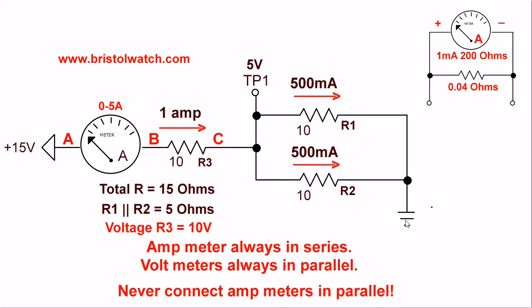Now if I take a voltmeter and measure from ground to test point 1, I will read 5 volts. If I take a voltmeter and read from B to C, I will read 10 volts. 5 volts plus 10 volts equals 15 volts.